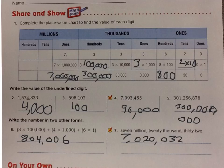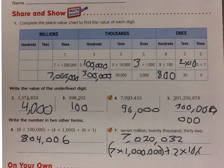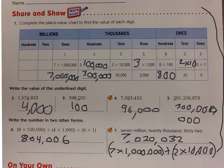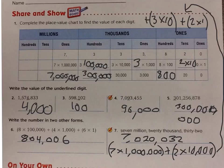Now I need to write it in expanded form. That 7 is in the millions place, so I'm going to write 7 times 1,000,000. Plus, there is a 2 in the 10,000th place, so I'm going to write 2 times 10,000. And then I need to write plus 3 times 10. And then there's a 2, so I need to put plus 2 times 1. And I have finished with my expanded form.